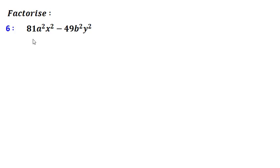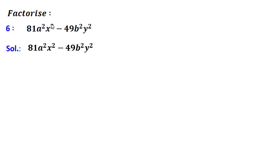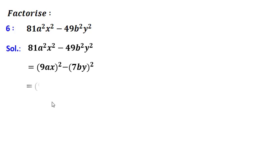Sixth problem is 81a²x² minus 49b²y². Now 81a²x² — 81 is the square of 9, so the first term is the square of 9ax. And 49b²y² is the square of 7by. So I will write this as (9ax + 7by) into (9ax - 7by).